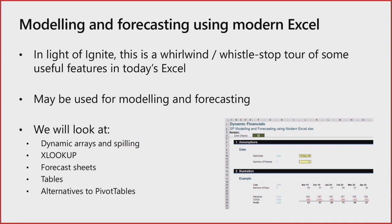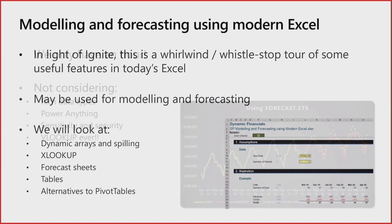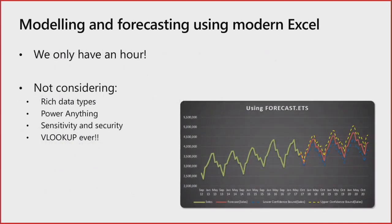We've had Ignite recently down in Florida and I want to showcase a few things that will be part of modeling and forecasting going forward. It's meant to be a whirlwind whistle-stop tour of useful features in today's Excel. We'll look at dynamic arrays, the XLOOKUP function, forecast sheets, tables, and an alternative to pivot tables. We won't be covering rich data types, anything starting with the word 'power,' or the sensitivity and security features announced at Ignite. And VLOOKUP will never appear in any presentation I do — but that's a running joke.